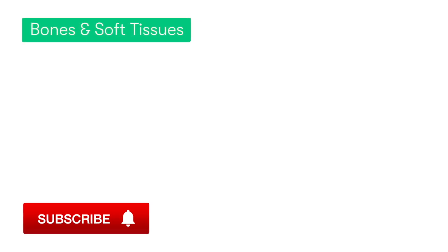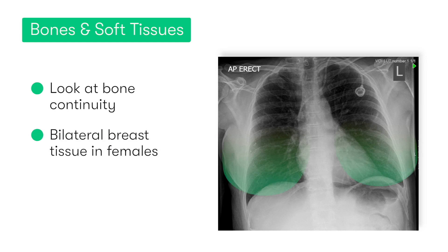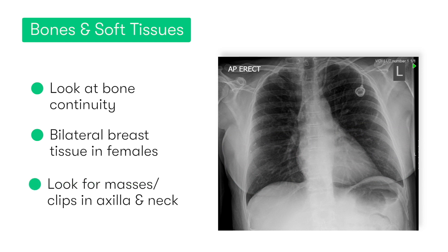Starting with B, we're going to look at the bones and soft tissues. In terms of soft tissues, in females we should normally be able to see bilateral breast tissue present. But in both sexes, we should also be reviewing the neck and the axilla to look for any masses or even metallic surgical clips, if the patient has undergone any surgery in those areas, such as a thyroidectomy or an axillary node clearance.